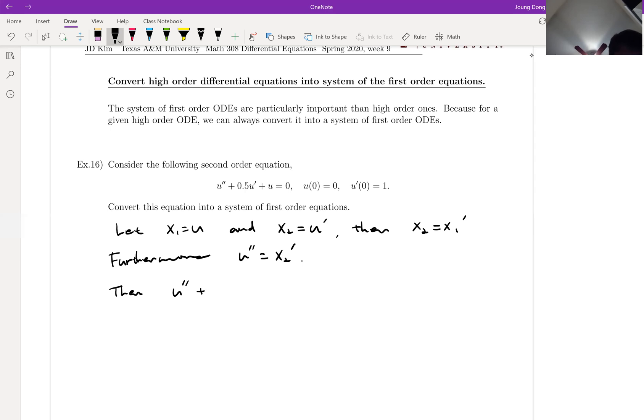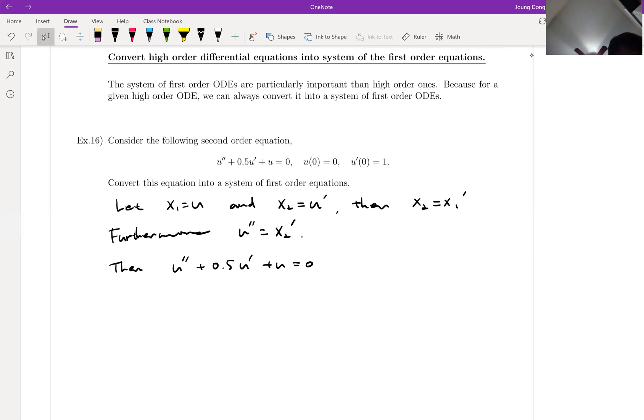Then my homogeneous second order differential equation can be written in terms of x1 and x2. u double prime is x2 prime, u prime is x2, and u is x1. So now my differential equation is replaced with x1 and x2.